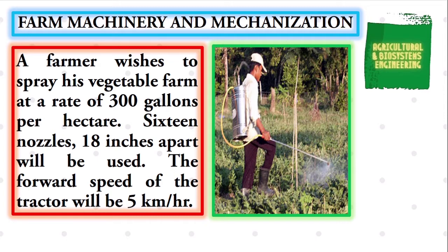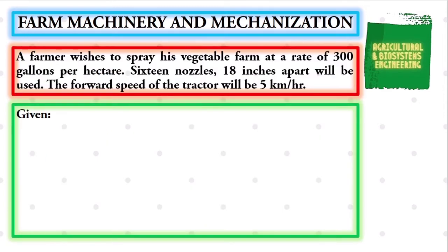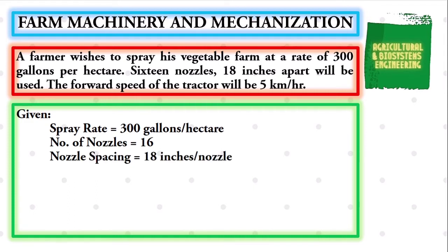To begin with, let us first identify our given. We have the spray rate of 300 gallons per hectare, the number of nozzles to be 16, the nozzle spacing to 18 inches per nozzle, and the speed of 5 kilometers per hour.